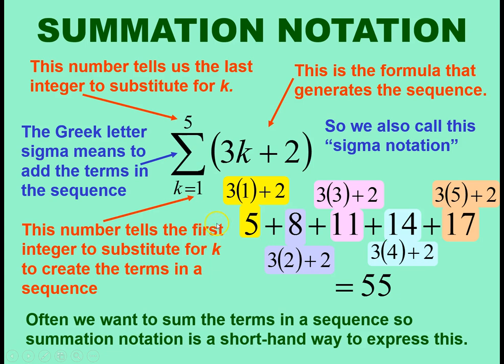The terms of the sequence are 5 because we first start by putting 1 in for k and 3 times 1 plus 2 is 5. Then we put 2 for k, 3 times 2 plus 2 is 8. Then we put 3 for k, 3 times 3 plus 2 is 11.